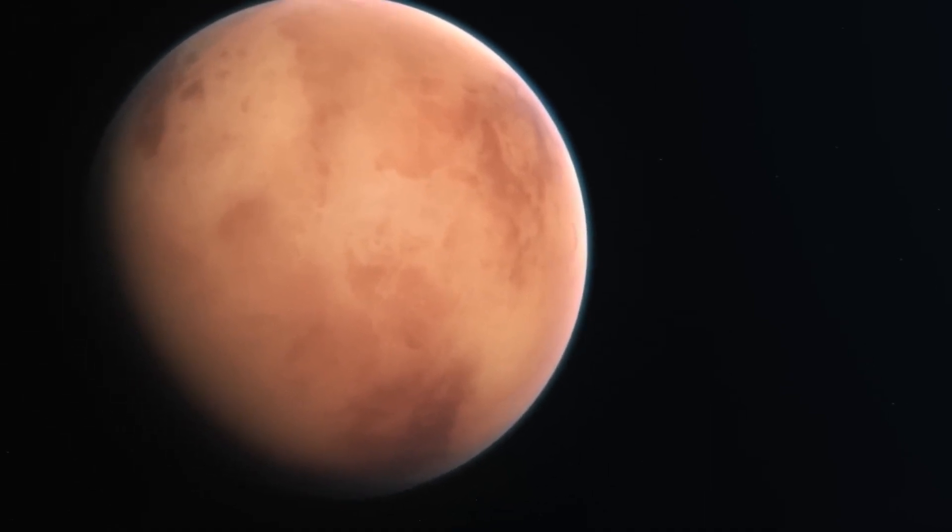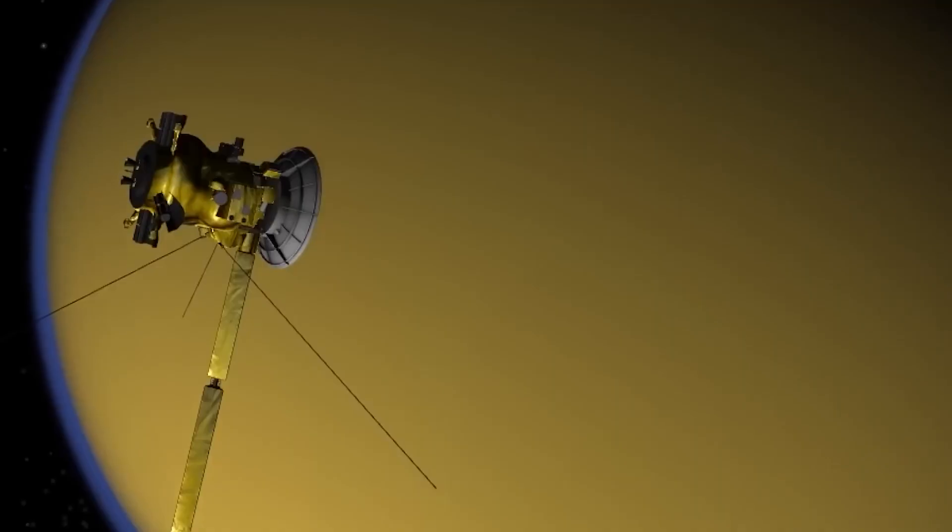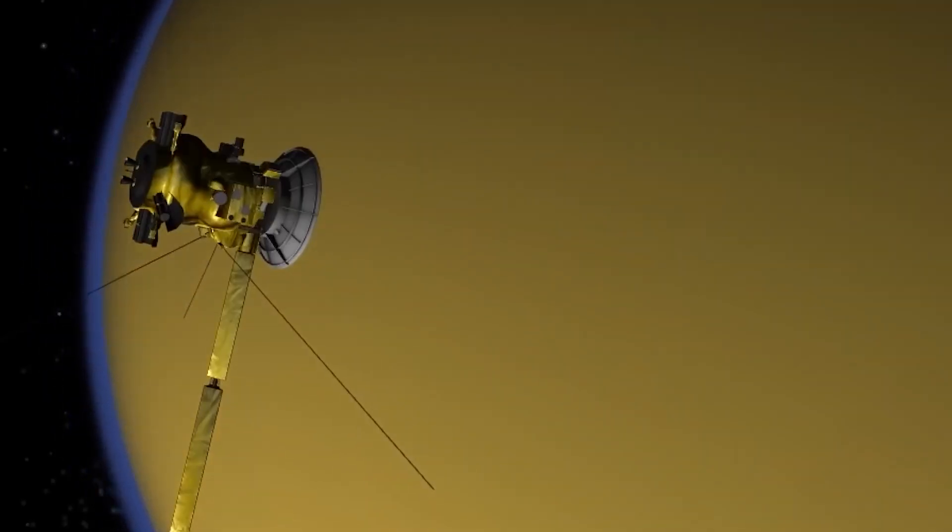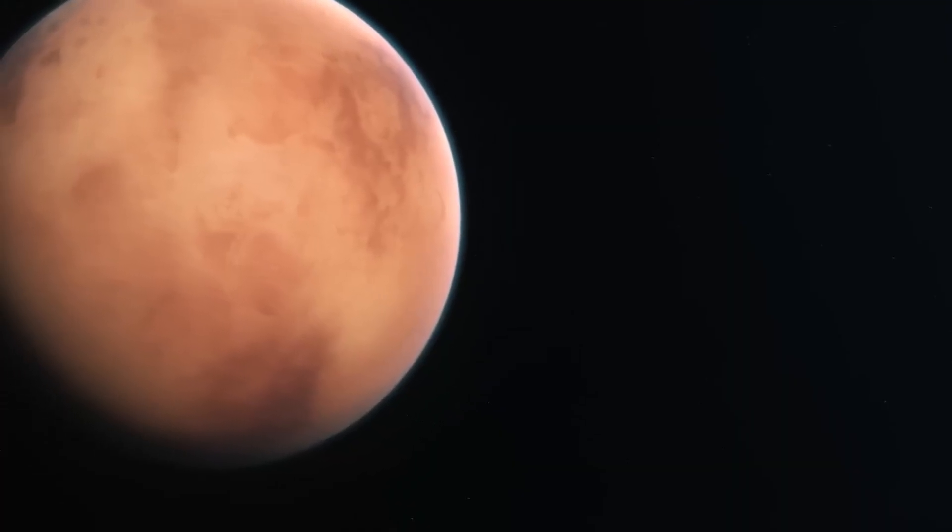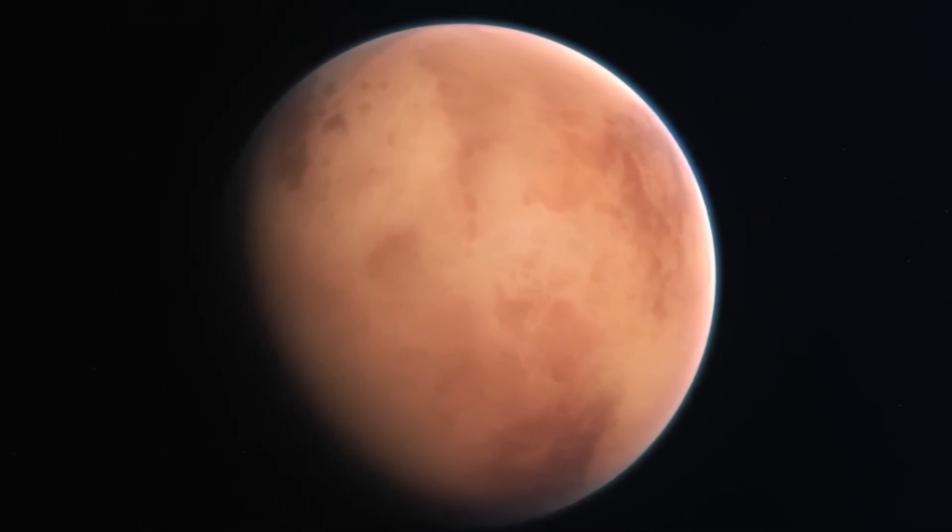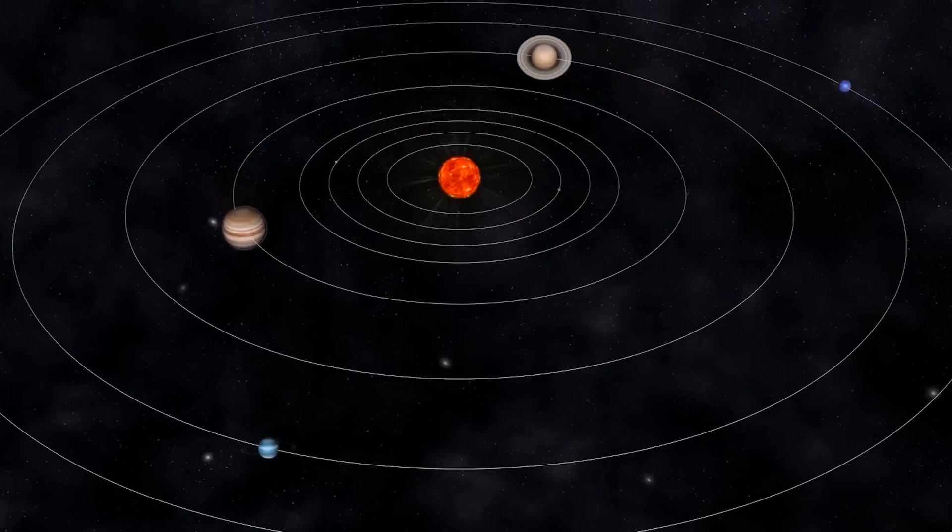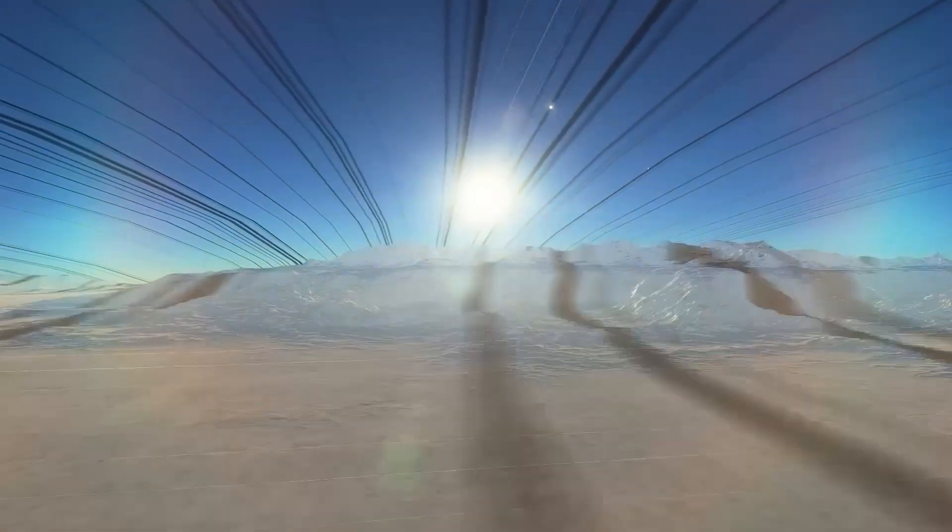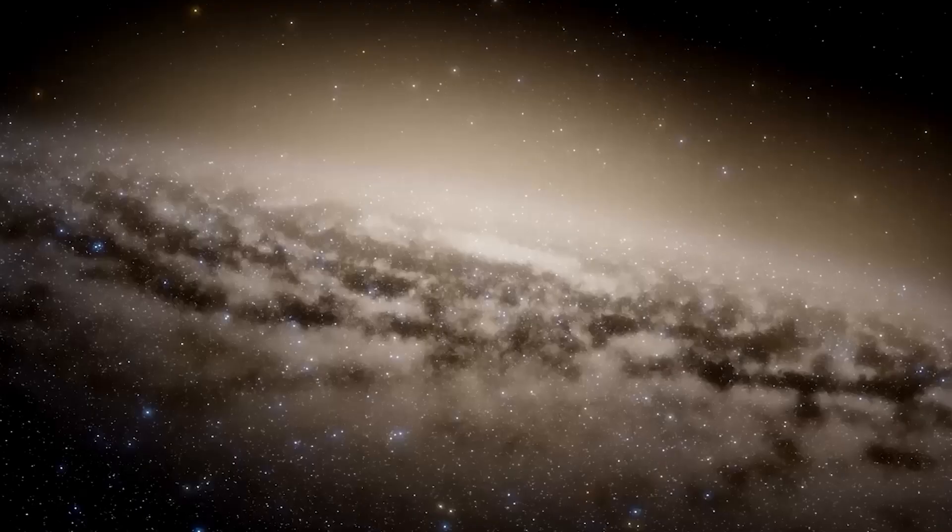The notion of life on Titan, and what that life might look like, represents a captivating frontier in the search for extraterrestrial life. Titan's peculiar characteristics and the diverse environments it offers create a tableau for a potential saga of discovery, the outcome of which could reshape our understanding of biology and the possibilities of life in the cosmos. It's a journey that invites us to question and challenge our preconceived notions of what life means, where it can exist, and how it can adapt to even the most extreme and enigmatic of environments.